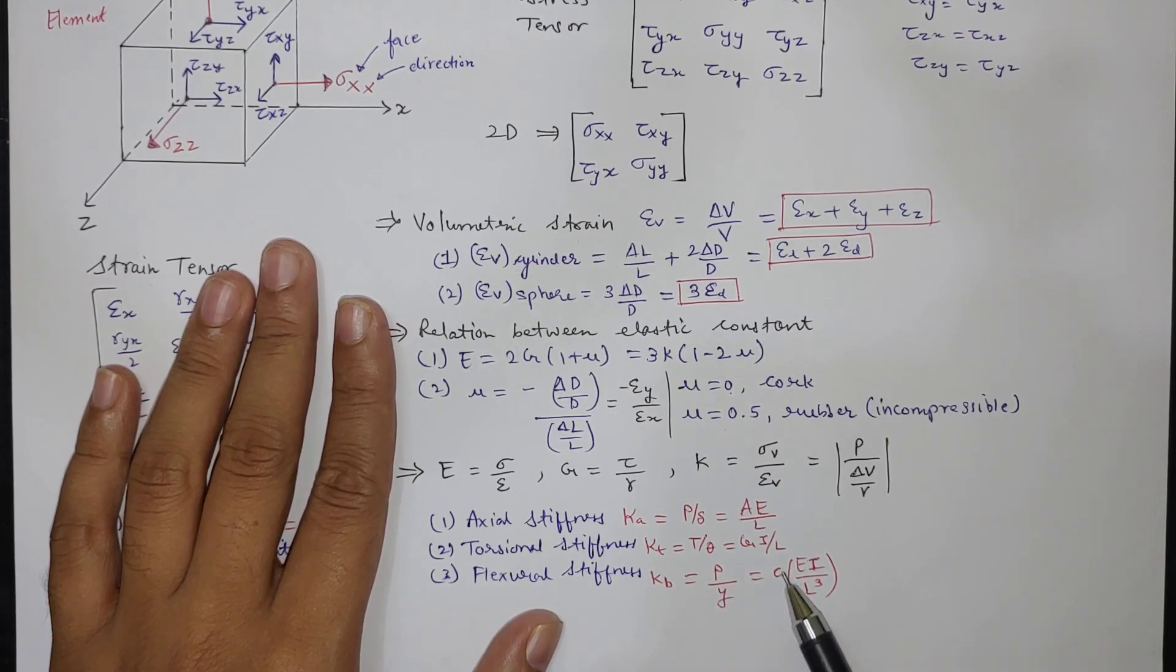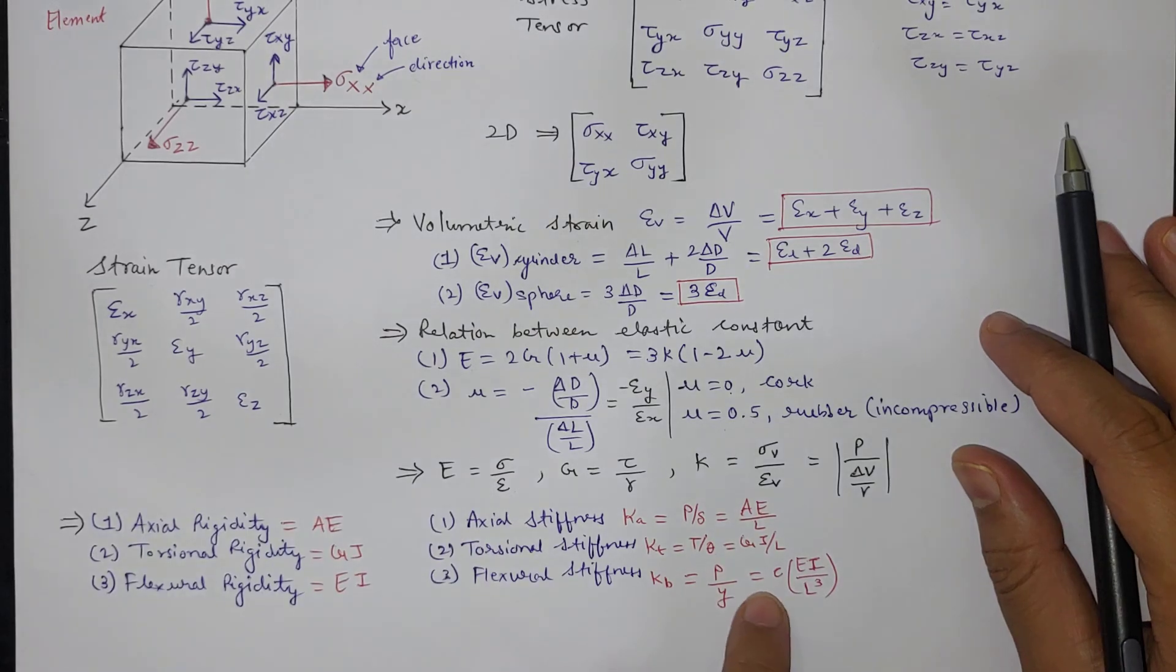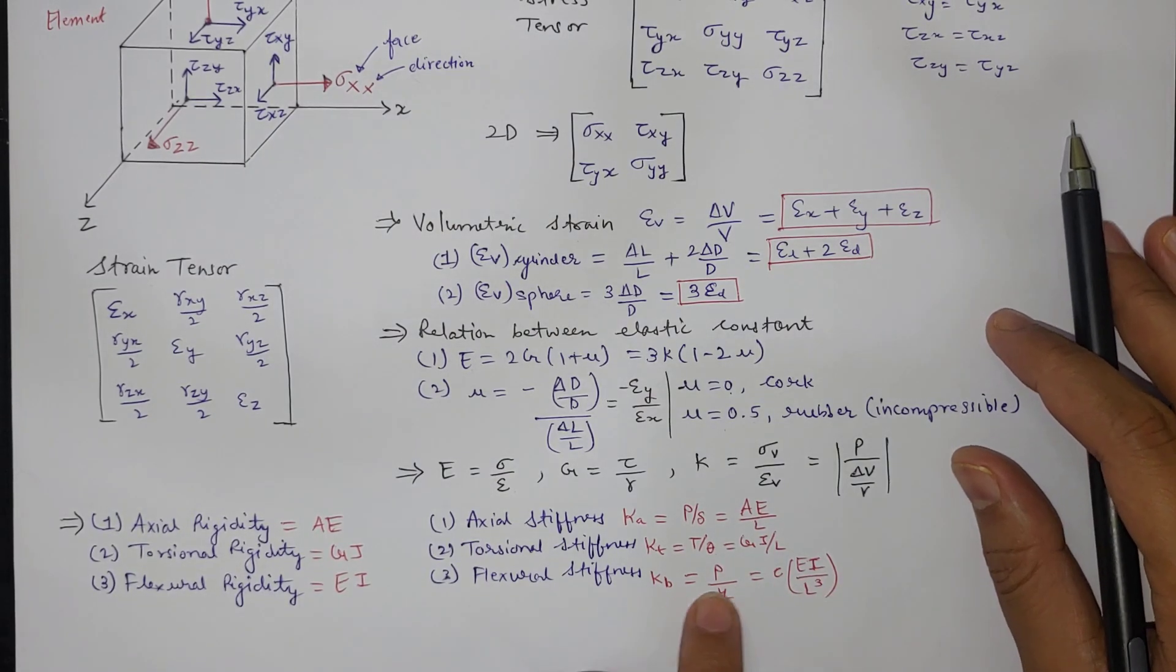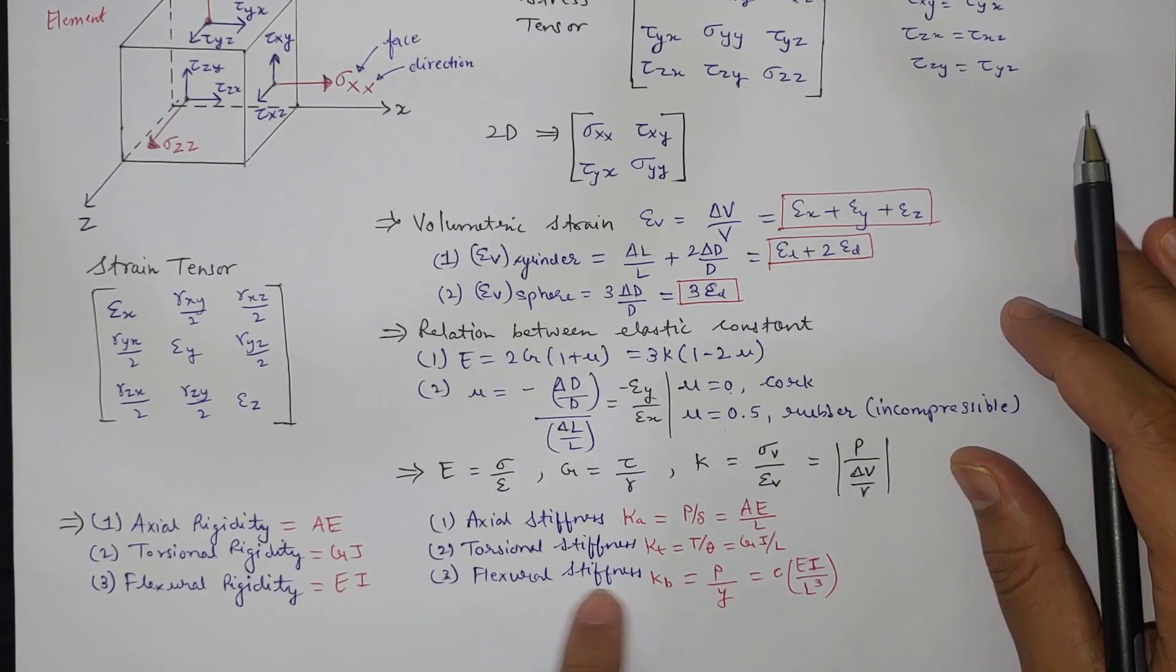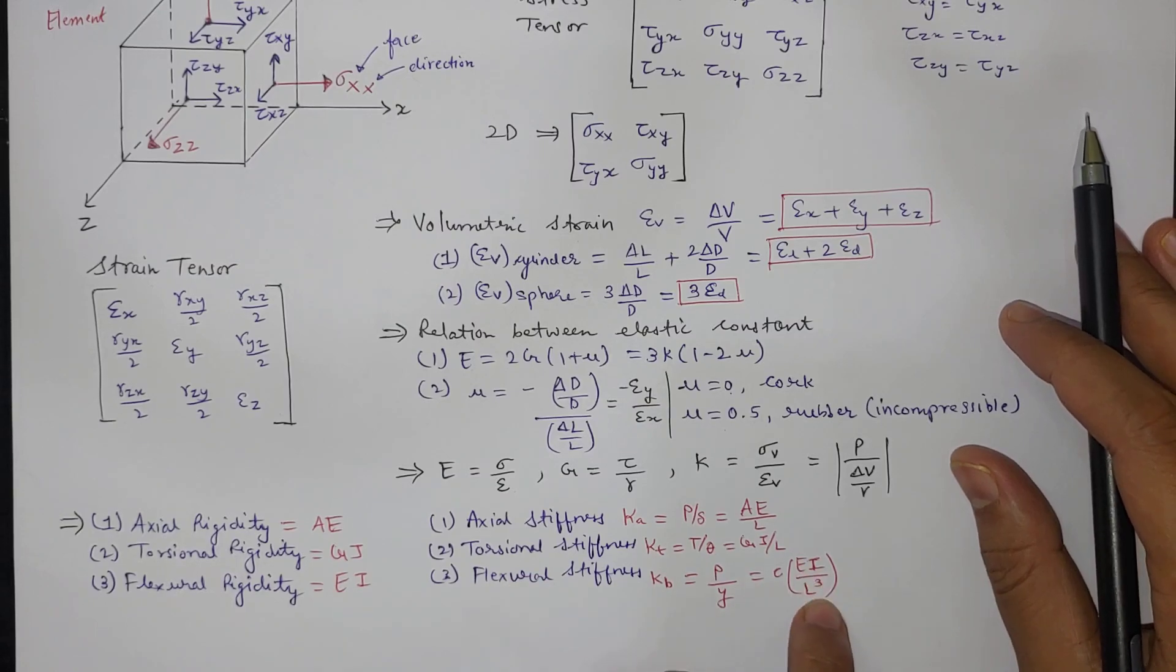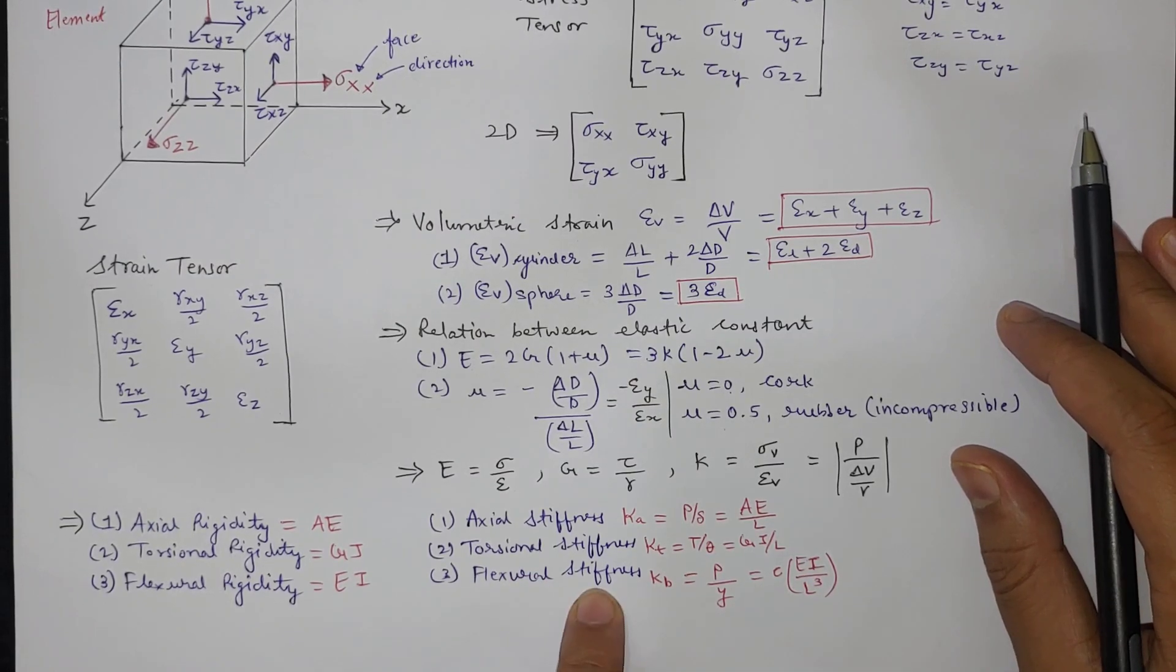So we get T by theta as GJ by L. And for bending or flexure stiffness K equal to P divided by Y which is some constant times EI by L cube. So this constant changes if it is simply supported or cantilever then it will change. So that is why it is constant and EI by L cube will define the flexure stiffness.